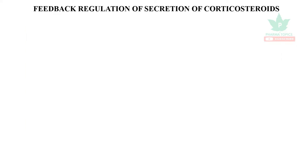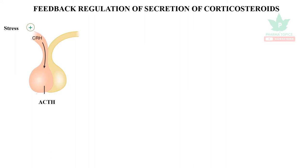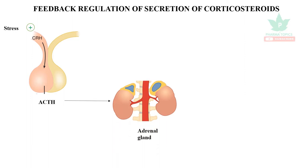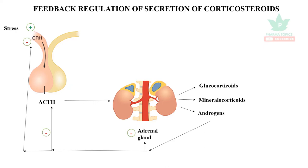Let us see the feedback regulation of secretion of corticosteroids. When there is any stress, it causes a release of corticotropin releasing hormone from the hypothalamus. The pituitary gland releases adrenocorticotropic hormone (ACTH), which stimulates the adrenal gland to release glucocorticoids, mineralocorticoids, and androgens. When the levels of these hormones increase, they cause inhibition of secretion of corticotropin releasing hormone and ACTH. This is the feedback regulation of corticosteroids.